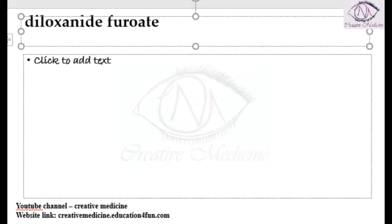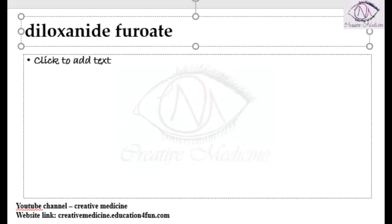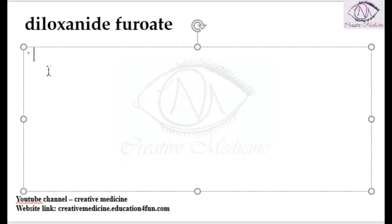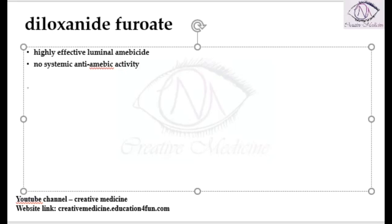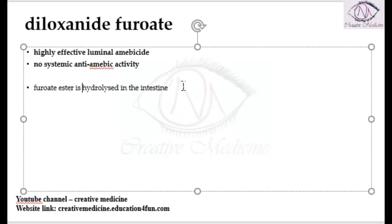Diloxanide furoate is an anti-amoebic agent — specifically a luminal amoebicide. It is a highly effective luminal amoebicide but has no systemic amoebicidal activity. This is because the furoate ester is hydrolyzed in the intestine itself, meaning it undergoes metabolism within the intestine.